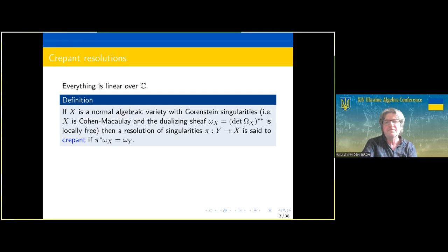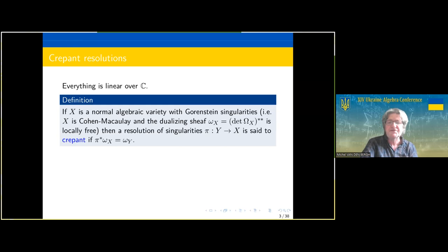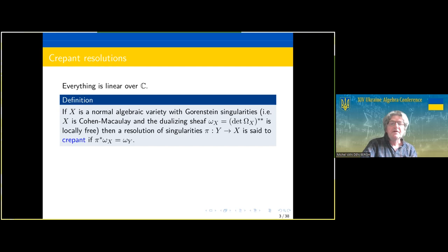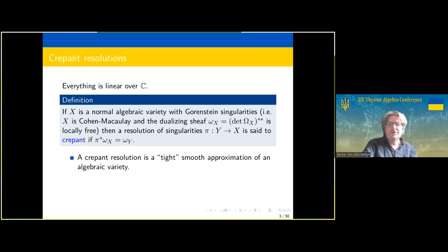To make things simple, the base field will be the complex numbers. I will be talking about singularities — specifically Gorenstein singularities, which are Cohen-Macaulay with trivial or locally free dualizing sheaf. We will also be interested in resolutions of such singularities, namely crepant resolutions. If we have a resolution of a singularity we can measure it by how it changes the dualizing sheaf, and if it doesn't change the dualizing sheaf then we call it a crepant resolution.